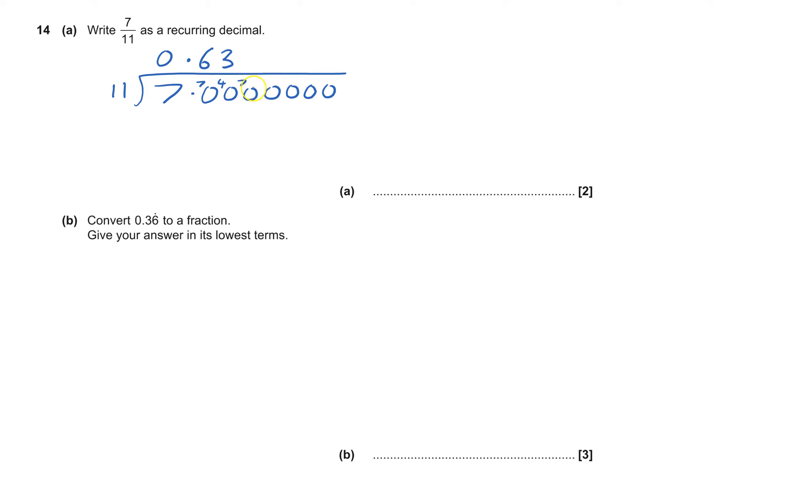Back to where I started. Now it's going to keep on going - 7, remainder 7, remainder 4, and so on. Therefore my answer will be 0.63 recurring, so it's 0.63 with both the six and the three recurring, so I put a dot over both of them.